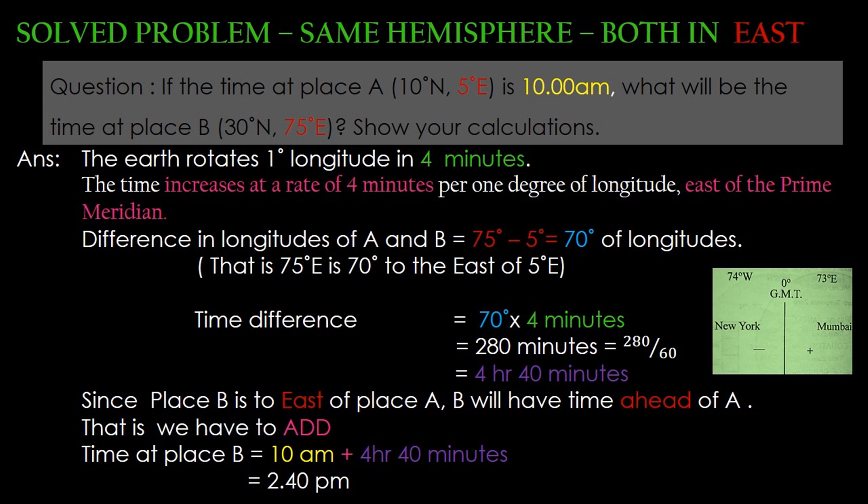We already know that the earth rotates 1 degree longitude in 4 minutes. The first step is to find out the difference in longitudes of A and B. Here both the longitudes are in the eastern hemisphere: 75 degrees east minus 5 degrees east is equal to 70 degrees of longitude.